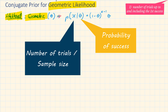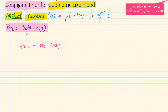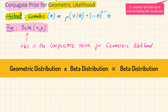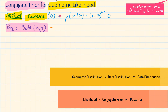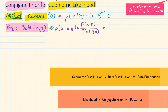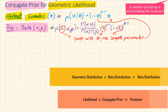The beta distribution is the conjugate prior for the geometric likelihood because the geometric distribution times a beta distribution is proportional to a beta distribution — a likelihood times its conjugate prior is proportional to the posterior. The beta distribution is written as P(x|α, β) = [Γ(α+β) / (Γ(α)·Γ(β))] · x^(α−1) · (1−x)^(β−1). We swap x with θ since the sample parameter is represented by θ.